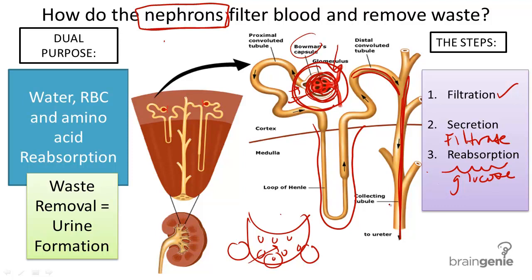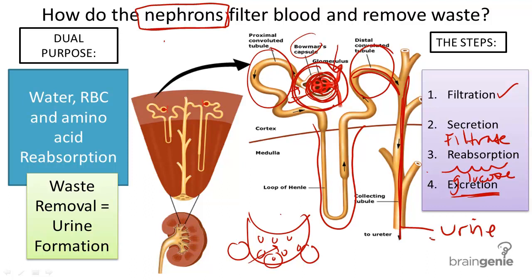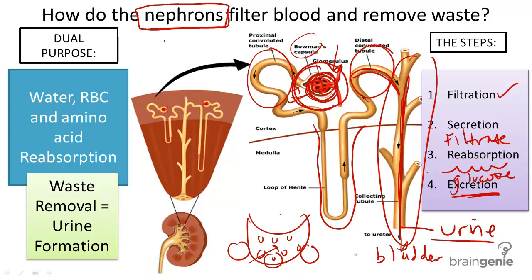Most of the secretion and reabsorption takes place in the proximal and distal convoluted tubules. The last job of the nephron is to excrete wastes as urine. Everything that passes into the collecting tubule at the end of the nephron travels to the bladder through the ureter, where it is stored until it is ready to be released through the urethra.